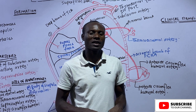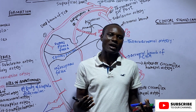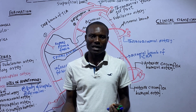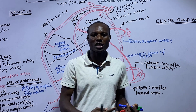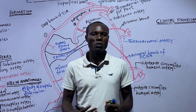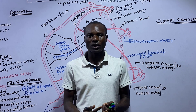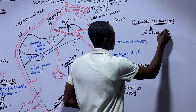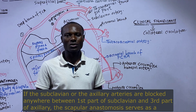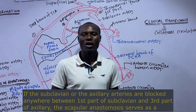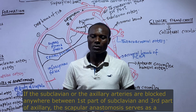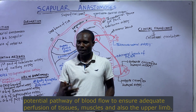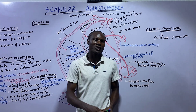The significance of the scapular anastomosis is that when there is an occlusion of the first part of the subclavian artery or the third part of the axillary artery, blood can still flow through these channels and perfuse the tissues and muscles in this region. It therefore serves as an important source of collateral circulation. That is the scapular anastomosis — we covered the definition, points of anastomosis, arteries involved, sites of anastomosis, and the mnemonic 'Some Arteries Can Deeply Trust Six People.'